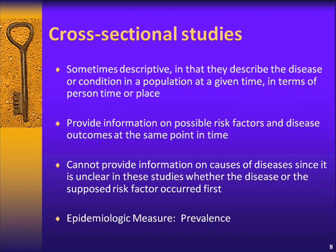The simplest type of analytic epidemiologic study is the cross-sectional design. Sometimes cross-sectional studies are purely descriptive, describing the disease in a population at a given time in terms of person, place, or time. But they can also provide information on possible risk factors and disease outcomes at the same point in time. For example, a cross-sectional study to determine risk factors for latent TB infection among employees in a healthcare setting might be conducted by asking employees about possible risk factors and then testing them for latent TB infection. This study is limited in that it cannot provide information on the causes of infection.